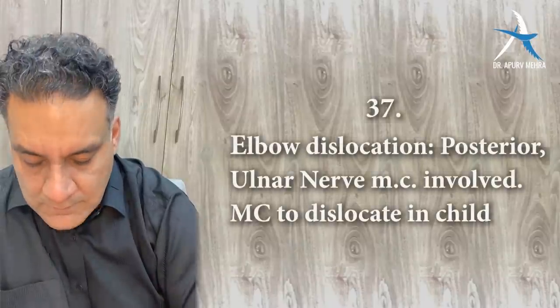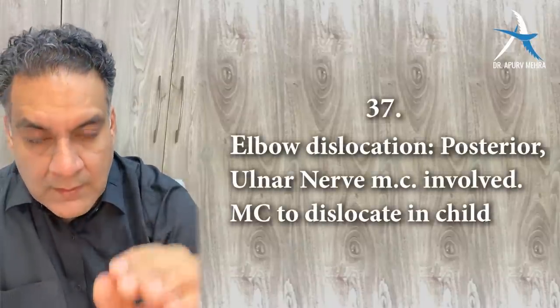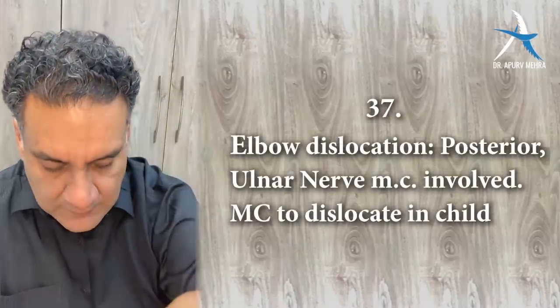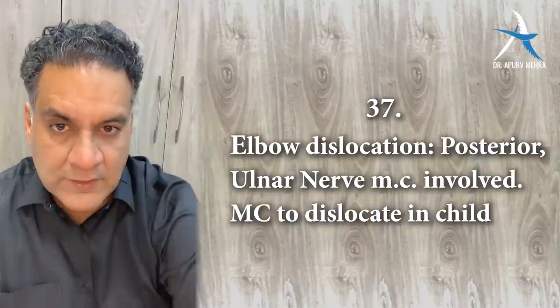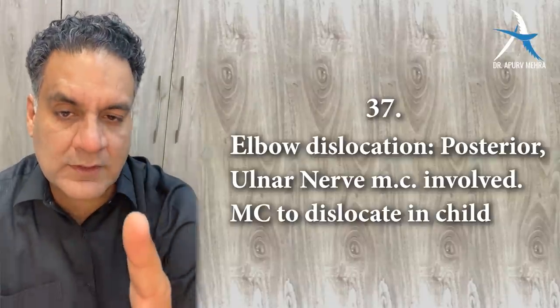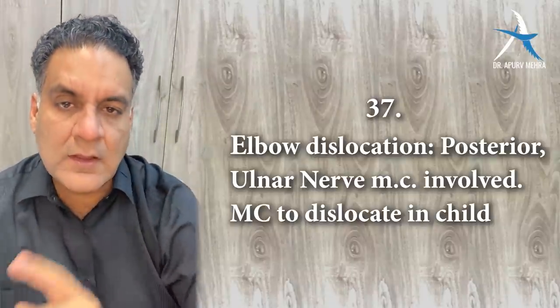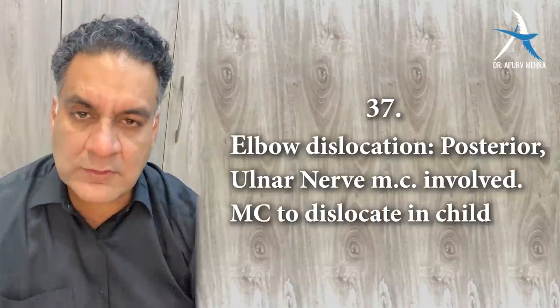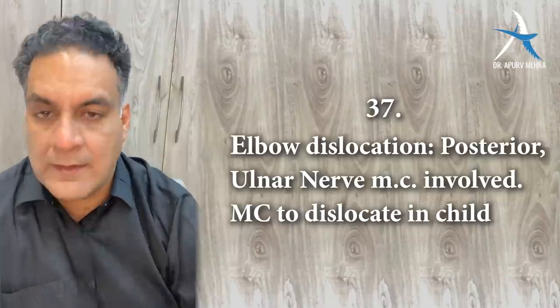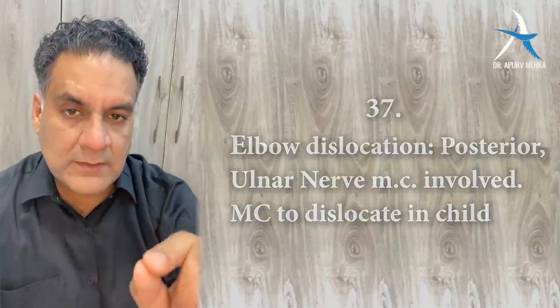Point number thirty-seven: elbow dislocation occurs posteriorly, the ulnar nerve is involved, and it is the most common dislocation in children. Overall, the most common dislocation is anterior shoulder dislocation, but in children it is posterior elbow dislocation.